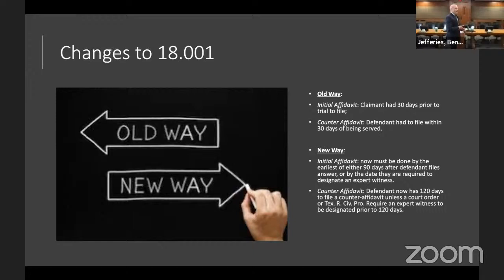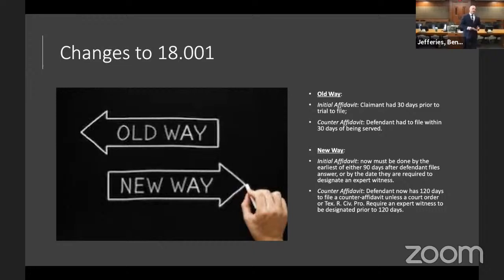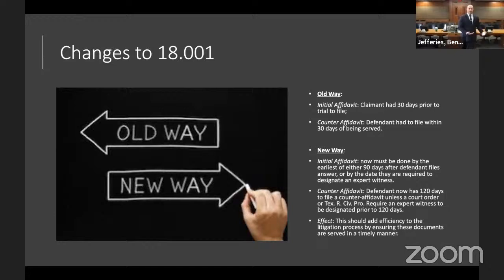For the counter-affidavit, where it was previously possible to file at the eve of trial, it now must be filed 120 days after the point when notice was received, or by the date the expert witness has to be designated — the same framework as the initial affidavit, either through court order or through the Texas Rules of Civil Procedure. This adds efficiency by giving the claimant time to prepare documentation, and giving the defense proper time to evaluate claims and formulate a response, removing much of the surprise that could come with filings on the eve of trial.